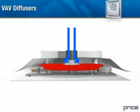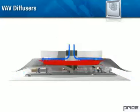The unique design of the Price VAV diffuser moves an integral damper to vary airflow, while maintaining outlet velocities and excellent throw characteristics.